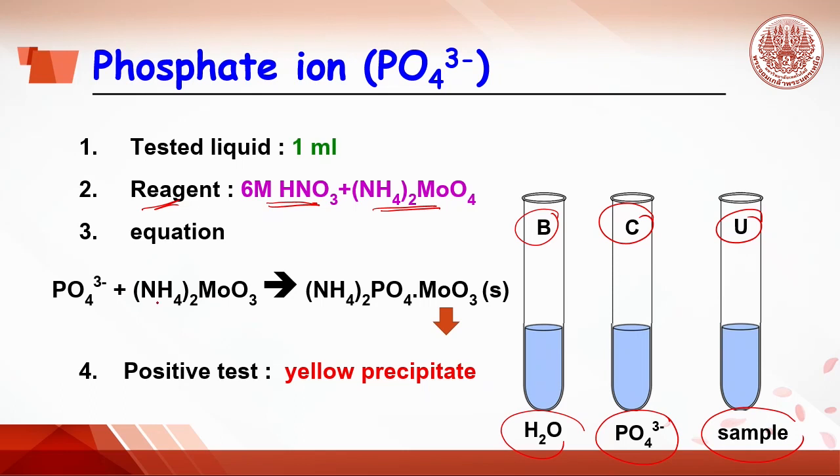Once ammonium molybdate is added, it will react with phosphate ion to get the precipitate of ammonium phosphor molybdate, which is yellow precipitate. So, in the C tube, we will see yellow precipitate. If in the C tube cannot be seen, dip the tube into the hot bath.